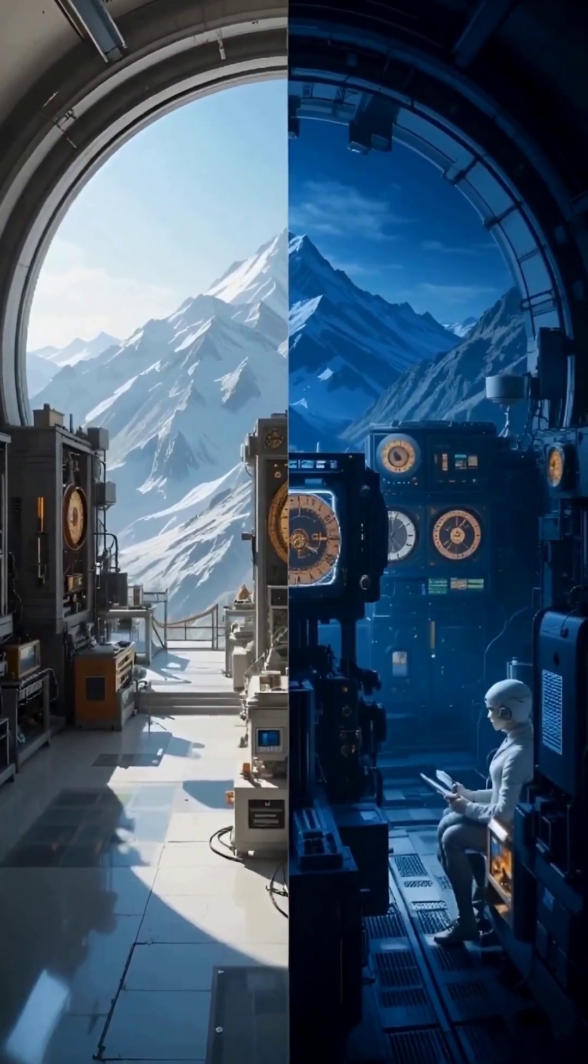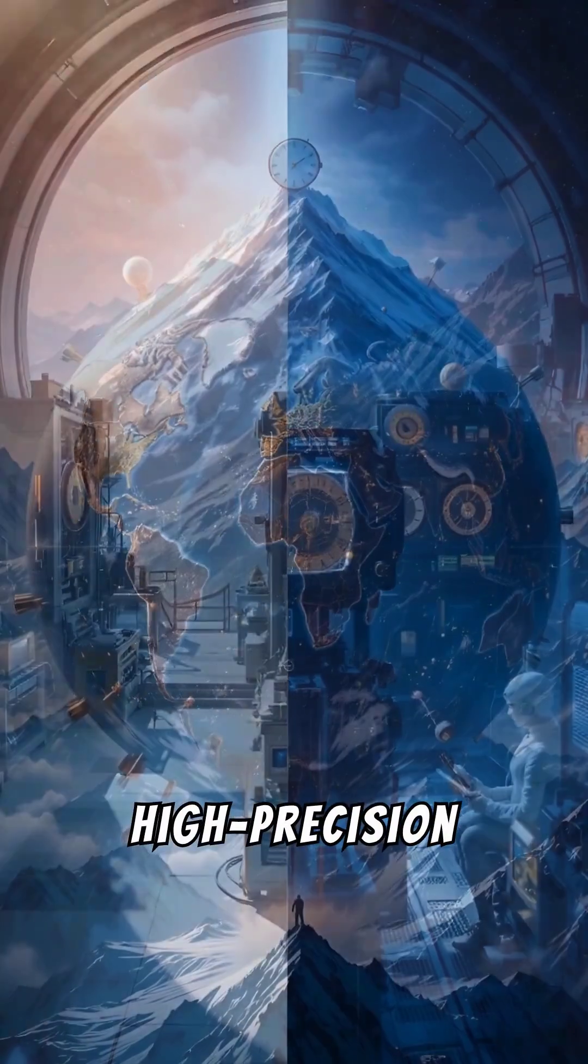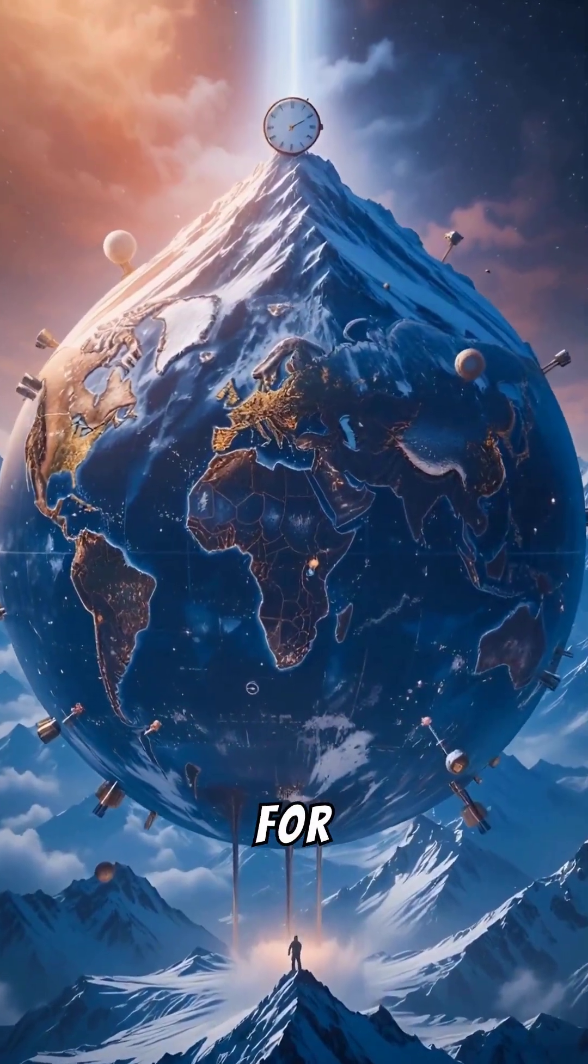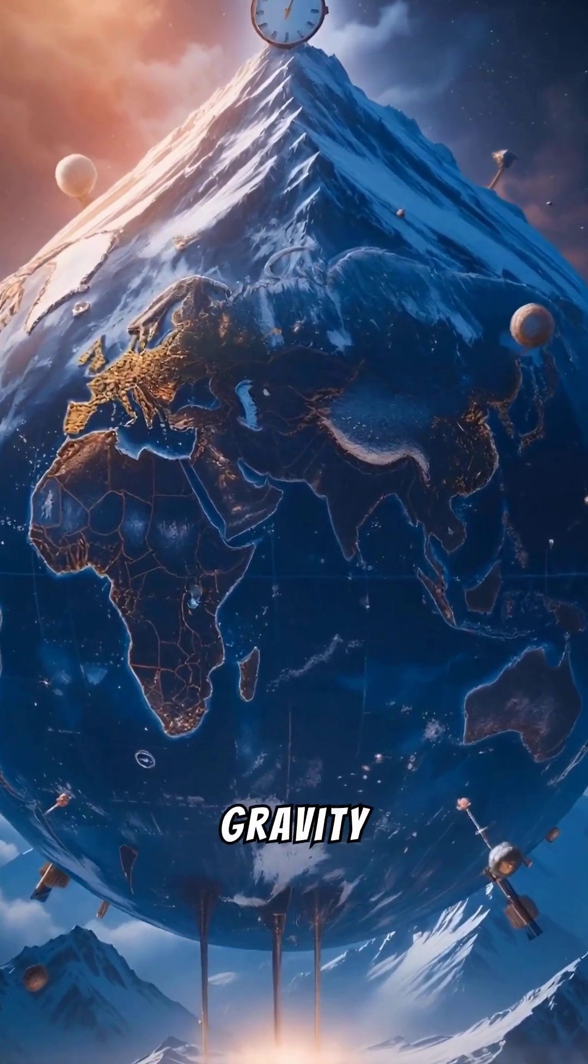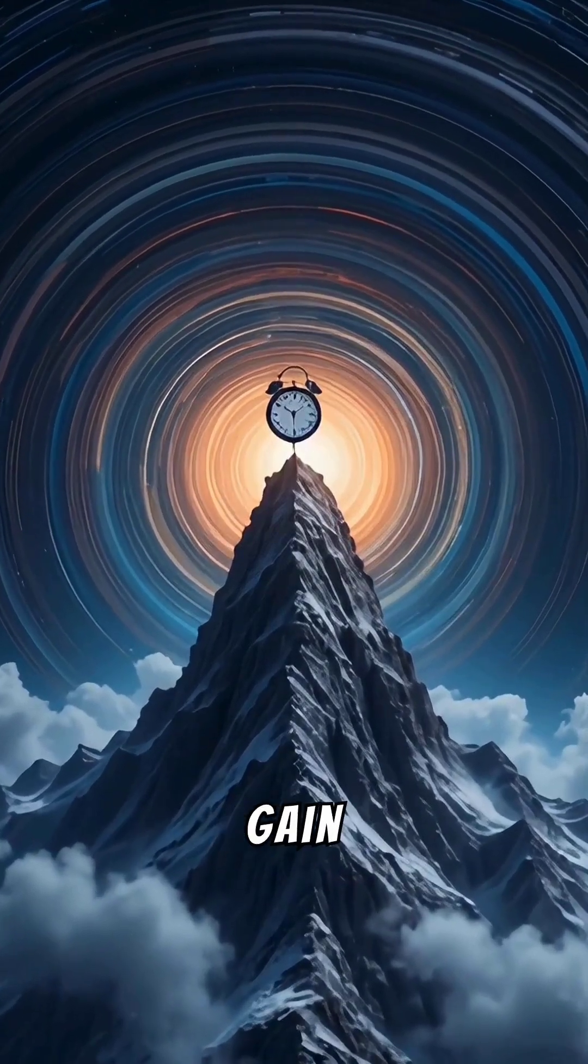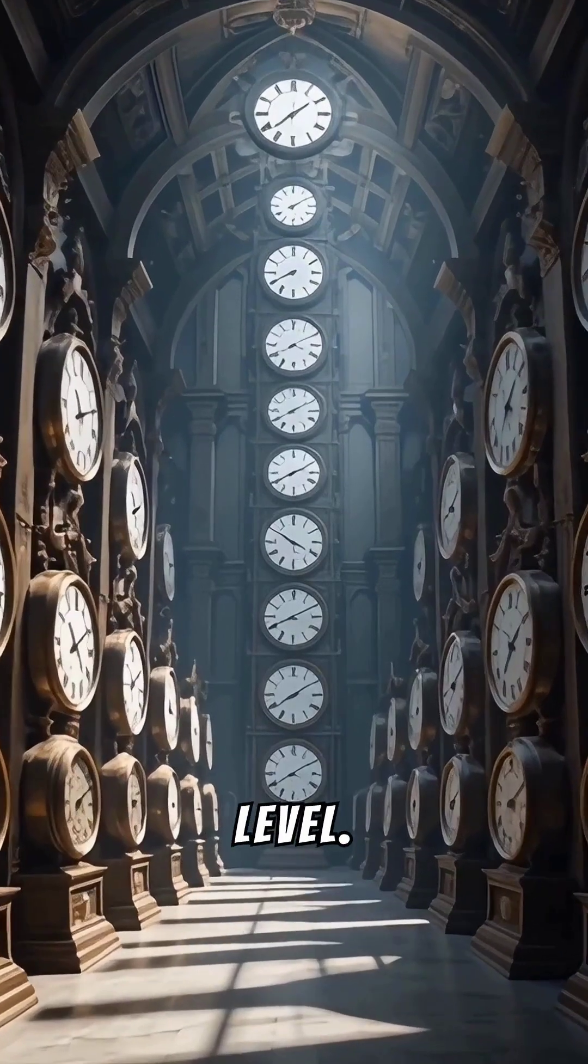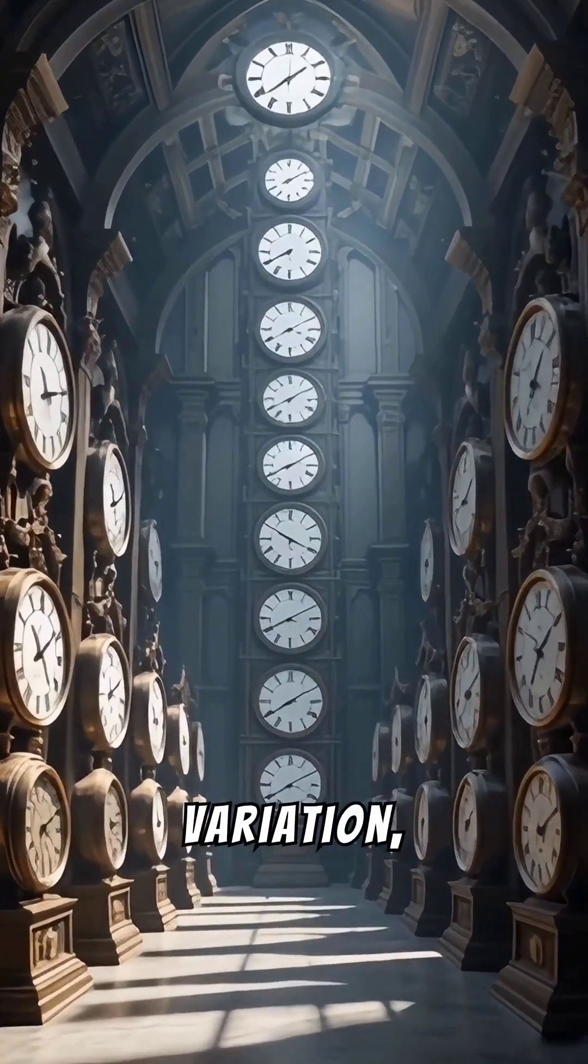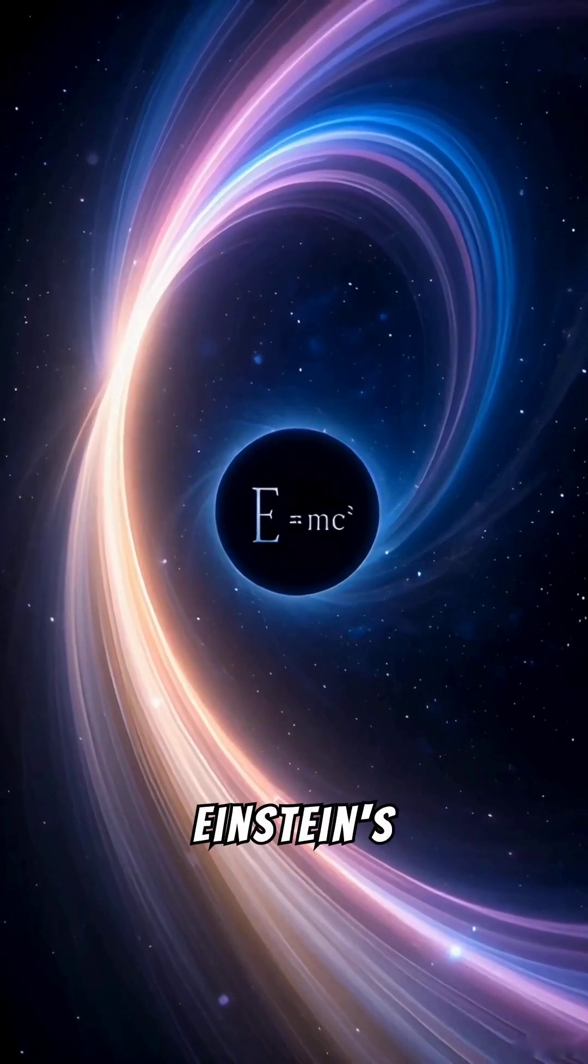This difference, although imperceptible in everyday life, is real and measurable with extremely high-precision instruments. For example, atomic clocks located on mountaintops, where gravity is slightly lower due to the greater distance from the Earth's center, gain fractions of a second each year compared to identical clocks located at sea level. This variation, although minuscule, is a direct confirmation of Einstein's theory.